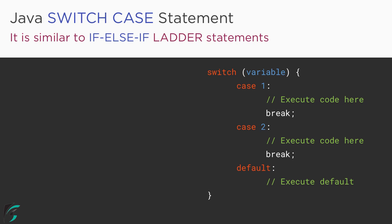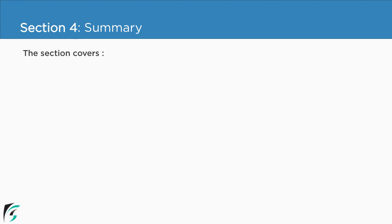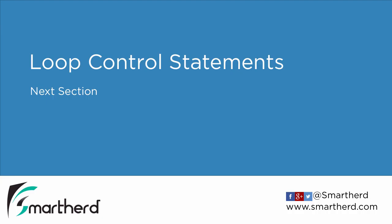To summarize: the variable used in a switch case statement can only be either integer or string — other data types such as double or boolean are not allowed. With this we have reached the end of this section, where we covered if-else conditional statements, conditional expressions, and switch case statements. In the next section we will check out loop control statements — see you all there.